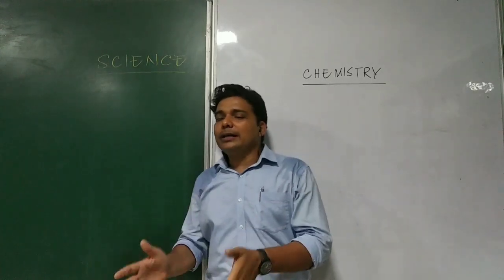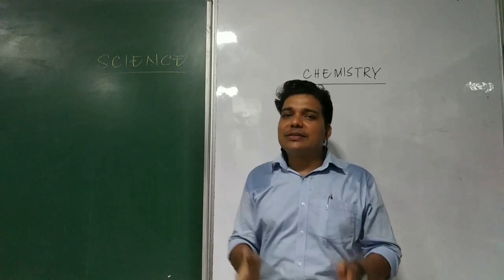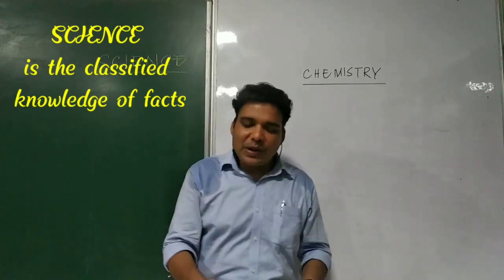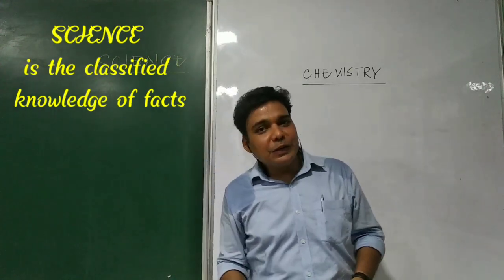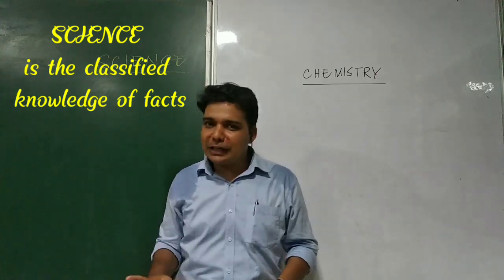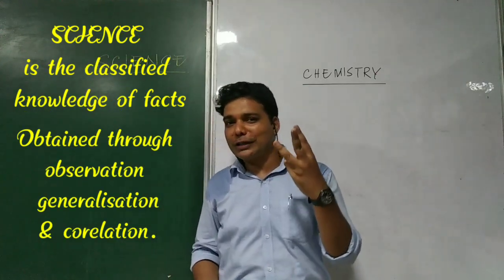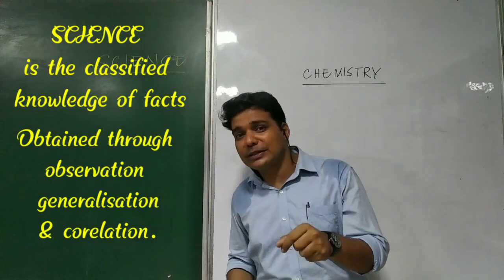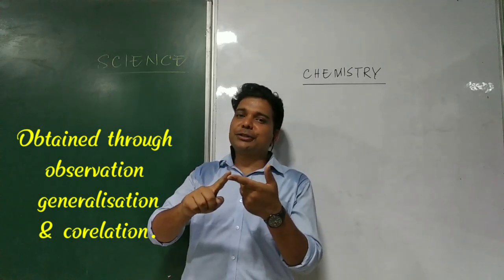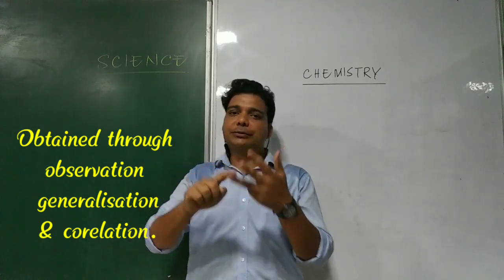By definition, science is the classified knowledge of facts. These facts are obtained through observation, generalization, and correlation. These are three important aspects of science: observation, generalization, and correlation.